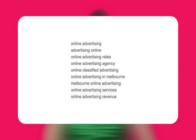Ask yourself if someone searching on these keywords would be looking for your product or service. If the keyword suggestion tool gave you this list, you would ask yourself: do I offer online advertising statistics? If you don't, you can simply add the term 'statistics' as a negative keyword to prevent your ad from appearing to users who are searching for statistics. It's perfectly acceptable to use single term keywords, but keep in mind that they tend to be more general, which could result in a lower quality score and a higher minimum bid.